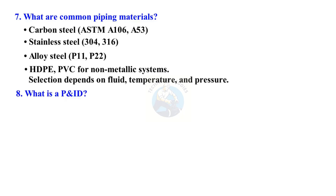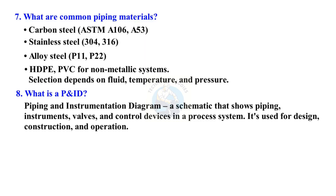What is a P&ID? A Piping and Instrumentation Diagram is a schematic that shows piping, instruments, valves, and control devices in a process system. It is used for design, construction, and operation.